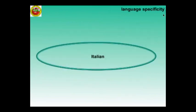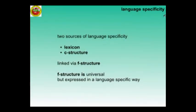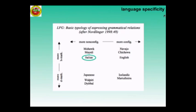Dealing with Italian, let me start with a couple of words about the topological characteristics of the language. There are two sources of language specificity: the lexicon and the C structures, which are linked via F structure. F structure is universal, but it is expressed in a language-specific way. In this regard, we have two important typological distinctions between more configurational languages and less configurational languages.